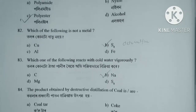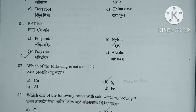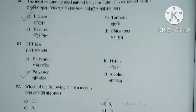Question number 81. PET (polyethylene terephthalate) is a — Option A. Polyamide. Option B. Nylon. Option C. Polyester. Option D. Alcohol. PET is a Polyester. Option C.